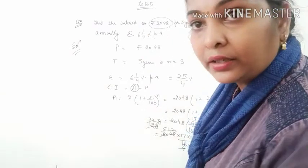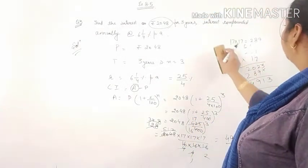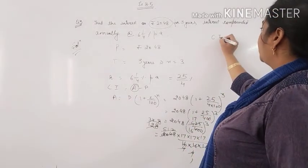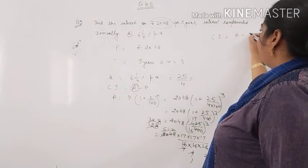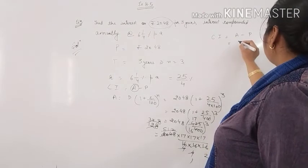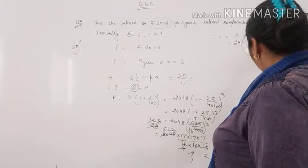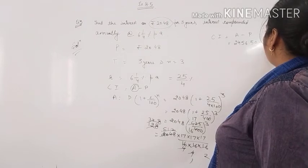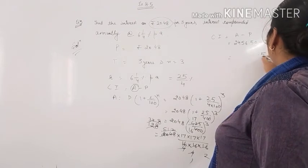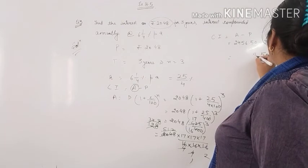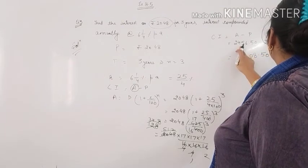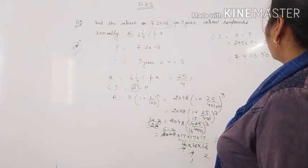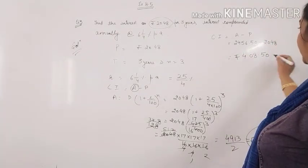Now you need to find the compound interest. Compound interest will be equal to amount minus principal, that is 2456.50 minus 2048. Do the calculation part, it will be 408.50.